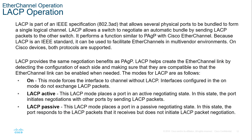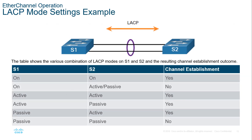For LACP operations, this is part of IEEE 802.3ad. It allows several physical ports, just like PAGP, to function together, but it is open standard. LACP has three modes: On, Active, and Passive. 'On' forces the interface to channel without LACP — interfaces do not exchange LACP packets. 'Active' means the port actively negotiates and initiates. 'Passive' means it listens and responds. The negotiation chart is similar: On/On establishes; On with Active or Passive does not; Active/Active yes; Active/Passive yes; Passive/Active yes; Passive/Passive no.